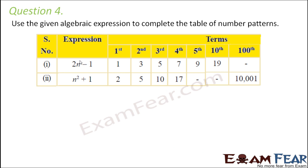Question number 4. Use the given algebraic expression to complete the table of number patterns. So here if you look at this table it shows a number pattern. So you see you have an expression which is 2n minus 1. So if this is the expression now as the value of n changes you get different terms. For example when n is equal to 1 the first term is 1. When n is equal to 2 the second term is 3.